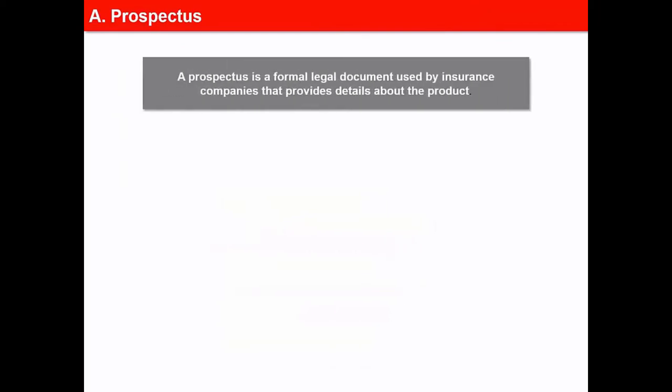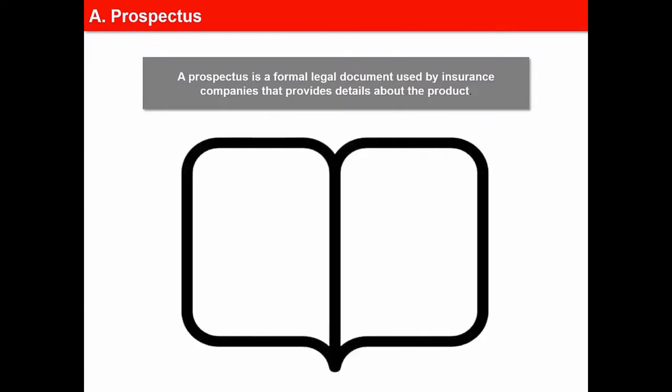First is a prospectus. It is a formal legal document used by insurance companies that provides details about the product. It is an introductory document which helps the prospective policyholder to get familiar with the company's products.